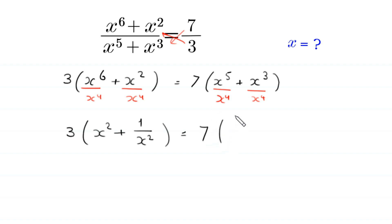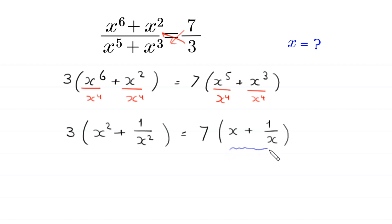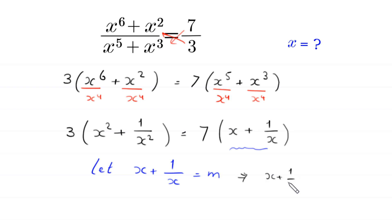Now, we suppose that x plus 1 over x is equal to m. Let x plus 1 over x equal m. Now, we square both sides of this equation. This implies that x plus 1 over x, whole squared, is equal to m squared. This equals x squared plus 1 over x squared plus 2, which is equal to m squared.